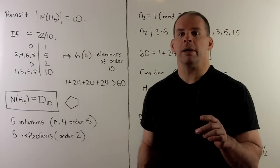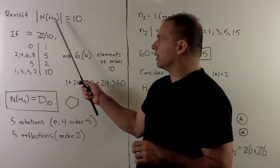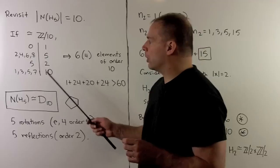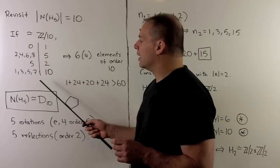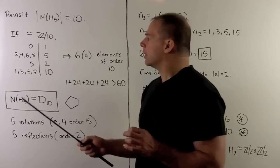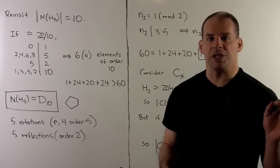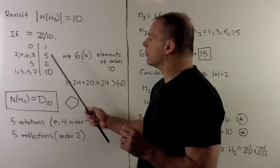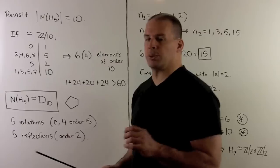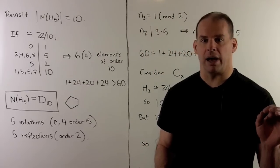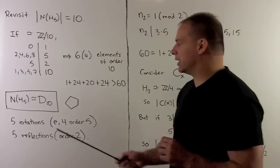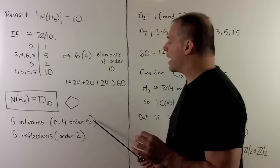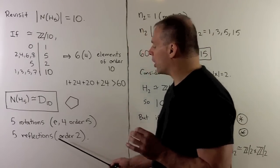Knowing the number of elements of order 3, we can revisit the normalizer of the Sylow 5. If it were isomorphic to Z mod 10, using the same argument, we'd contribute 6 times 4 elements of order 10, and counting again exceeds 60, so this can't happen. Therefore the normalizer of the Sylow 5 is isomorphic to D10, the symmetry group of a regular pentagon. Keeping track of elements in D10: we have 5 rotations — the identity and 4 elements of order 5 — and 5 reflections, all of order 2.